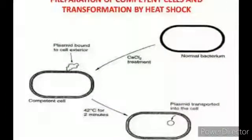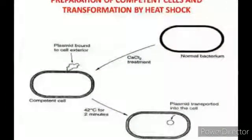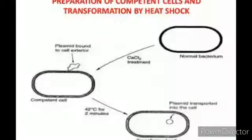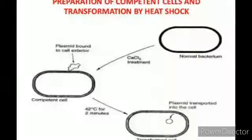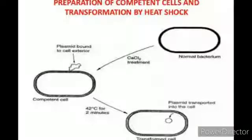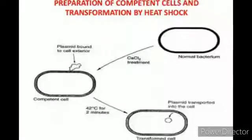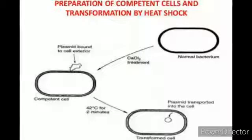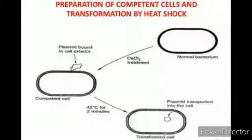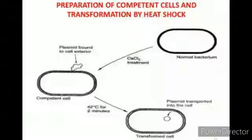Next, the competent host. To introduce recombinant DNA into bacterial cells, they should be made competent to take up DNA. This is done by treating with a specific concentration of calcium ions, which increases the efficiency of uptaking DNA by bacteria through pores of its cell wall.